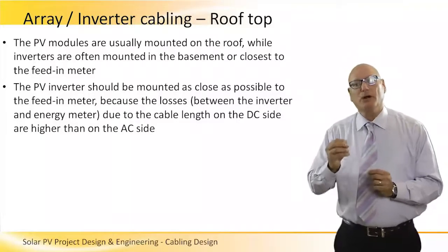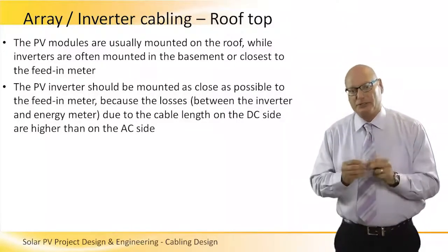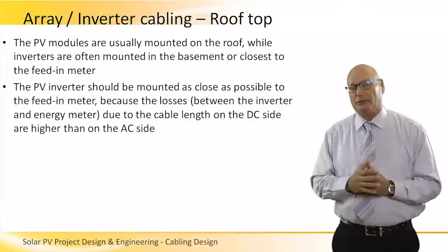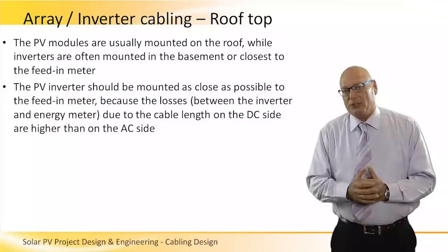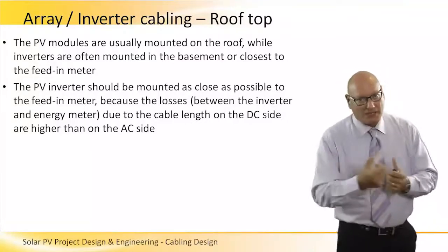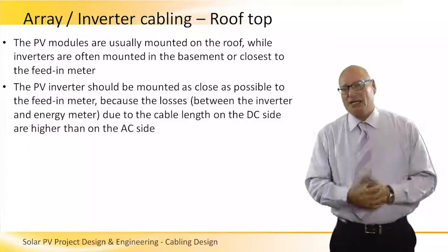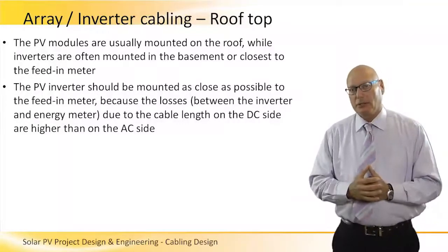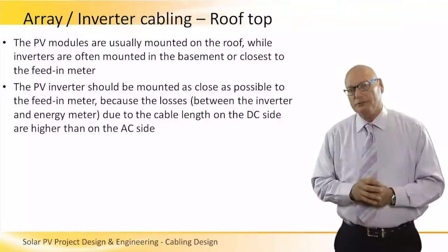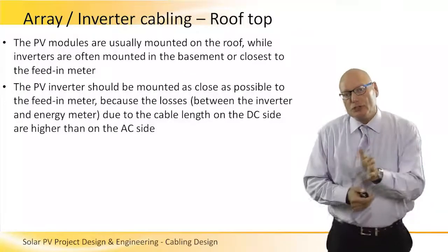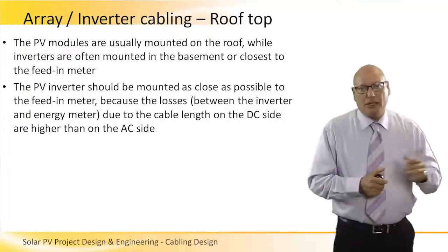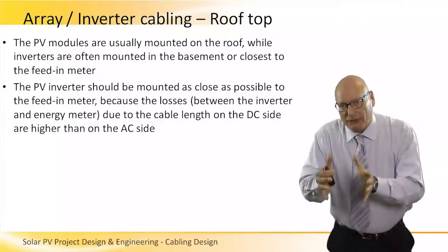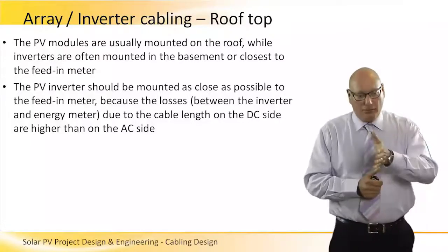PV modules are usually mounted on the roof, while inverters are often mounted in the basement or closest to the feeding meter. We need the inverter to be close to the feeding meter because the major AC lines carry the highest power to the grid. Because of the highest current and highest voltage, it's the biggest voltage drop, and we don't want to lose power after we inverted the DC on the way to the AC grid. We want whatever we inverted to send to the grid.